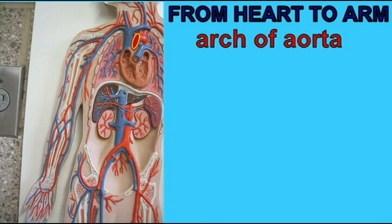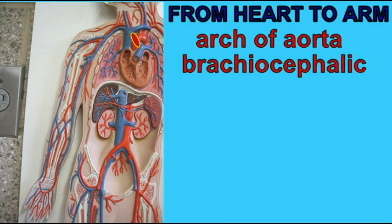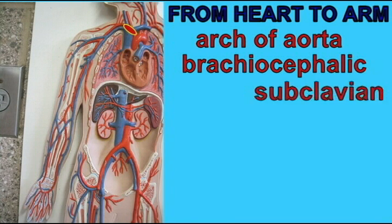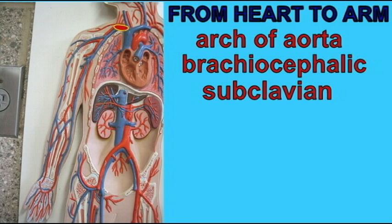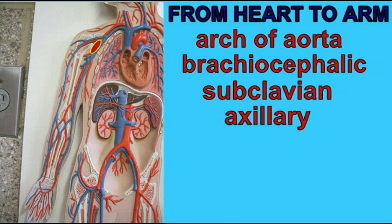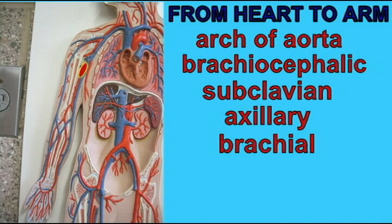On this model, showing just the right side, blood would go from the left ventricle to the arch of the aorta, to the brachiocephalic trunk — once again only on the right side — to the subclavian artery, to the axillary artery along the armpit, to the brachial artery of the upper arm.